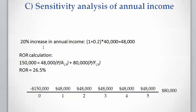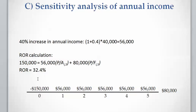For a 20% increase in annual income, we calculate 1 plus 20% multiplied by $40,000, which gives $48,000 of annual income per year for 5 years, and the rate of return is 26%. For a 40% increase, the calculation is 1 plus 40% multiplied by $40,000, which comes to $56,000 annual income. The rate of return in this new case is 32.4%.